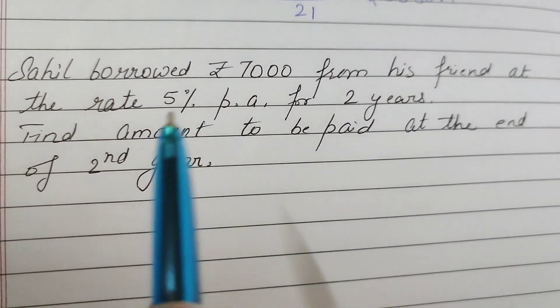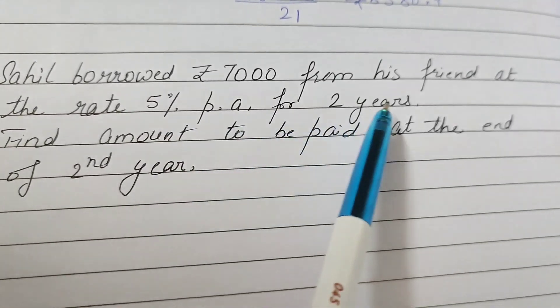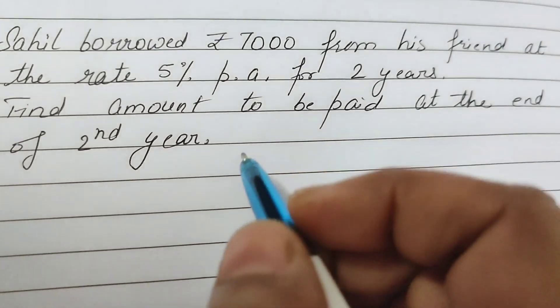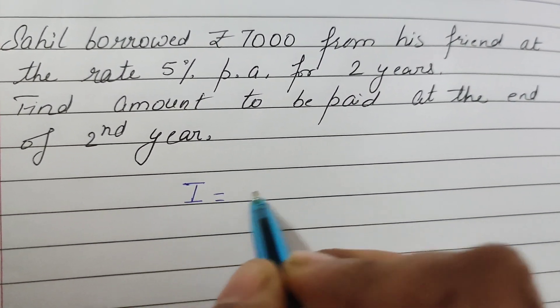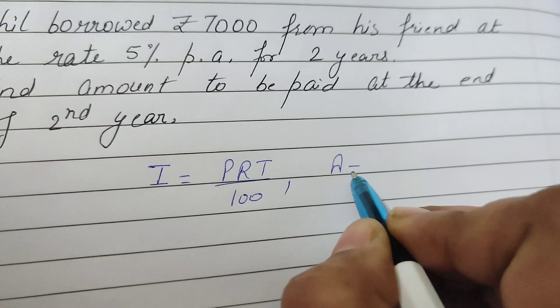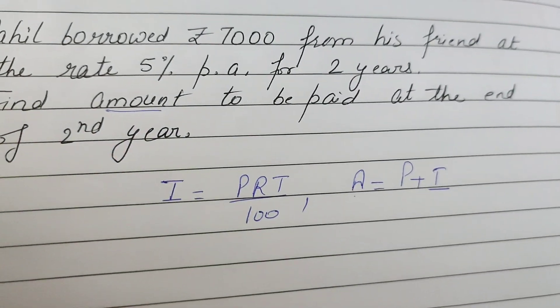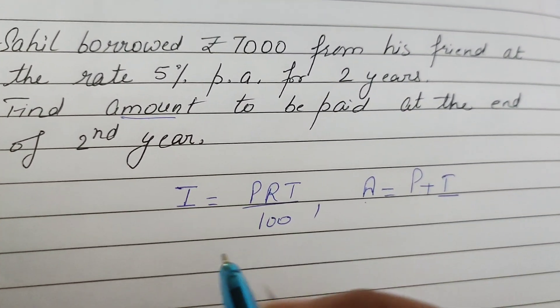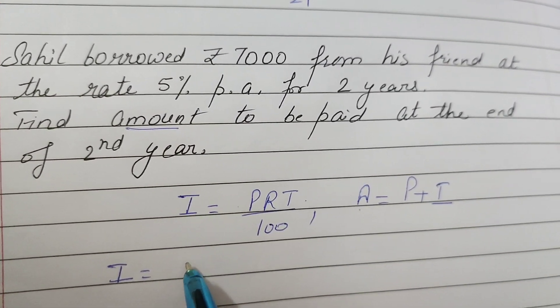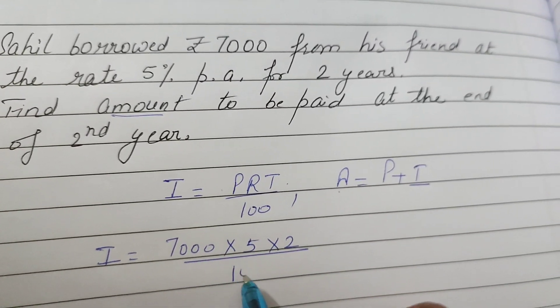Let us do next one. Sahil borrowed rupees 7000 from his friend at a rate 5 percent per annum for two years. Find the amount to be paid at the end of second year. In 7th grade we have only two formulas. First is interest, formula is PRT by 100, and the second formula is amount, A equals P plus I. We need to find the amount. P is known, R is known, T is known. First of all we will find out the interest. Interest is 7000, R is 5, time is 2 years, divided by 100.